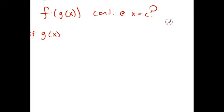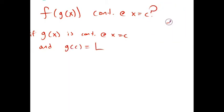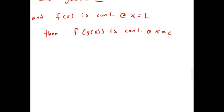So if we know g of x is continuous at x equals c, and g of c equals some value L, and f of x is continuous at L, so when you plug in L to f of x is continuous, then we know f of g of x is continuous at x equals c. Those are some good things to know.